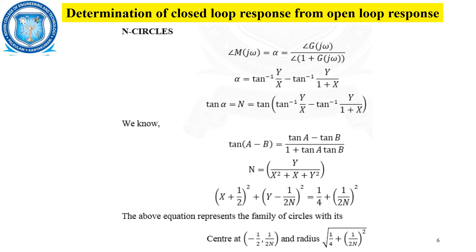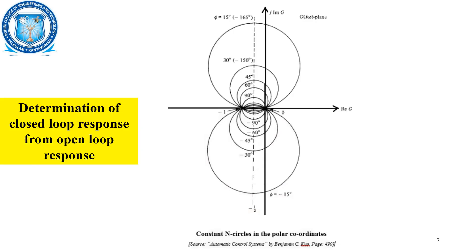This is a family of circles with center at (−1/2, 1/(2N)) and radius √(1/4 + (1/(2N))²). For N equal to 0 degrees, it is a straight line along the real axis. With increasing positive angles, the circles go beyond the positive imaginary axis, and for negative angles, the circles are in the negative imaginary axis. In this way, M circles represent magnitude and N circles represent phase angle in polar coordinate form, and thus the closed loop response is obtained from the open loop response.